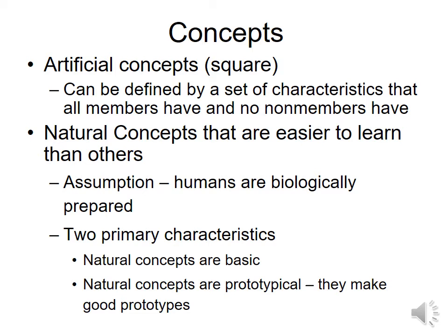However, we tend to have an easier time with natural concepts. Mammals, fish, and birds are easy for us to grasp. Natural concepts tend to be very basic and also prototypical. When I use the term 'prototype' or 'prototypical,' I mean the best example of a category or concept — not your first attempt at creating something. In psychology, 'prototype' always means the best example of a concept.